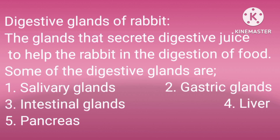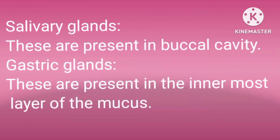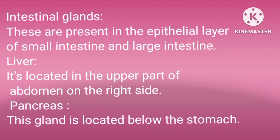The digestive glands of rabbit secrete digestive juice to help the rabbit in the digestion of food. Some of the digestive glands are: salivary glands, gastric glands, intestinal glands, liver, and pancreas. Salivary glands are present in the buccal cavity. Gastric glands are present in the innermost layer of the mucosa. Intestinal glands are present in the epithelial layer of the small and large intestine. The liver is located in the upper part of the abdomen on the right side, and the pancreas is located below the stomach.